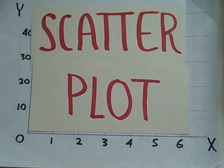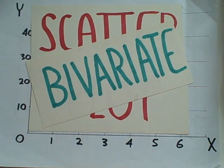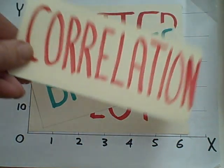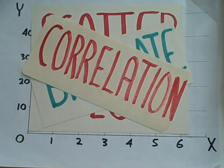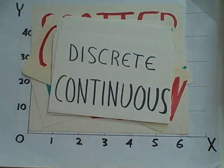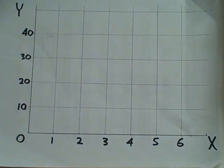This Headless Professor video is about the scatterplot. This is often called a bivariate scatterplot because it is used when we have two variables, and it shows the relationship between those two variables. It is a graphic representation of what a correlation formula is going to show us — the relationship between two variables. We can use scatterplots when both variables are in a scale that is interval or ratio, discrete or continuous.